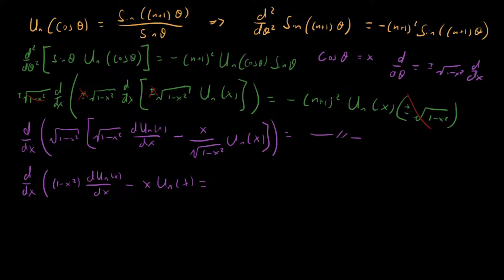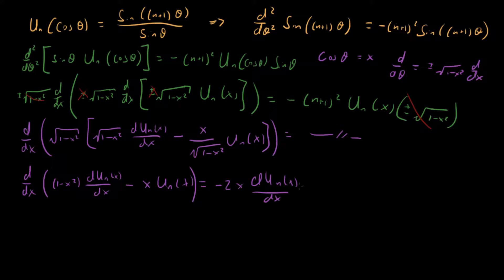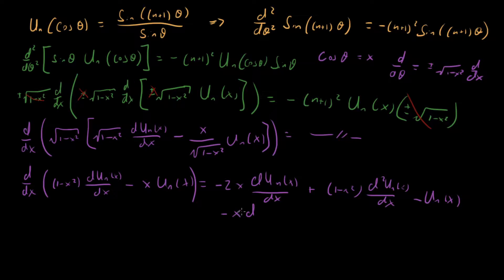That equals minus (n+1)-squared U_n of x. Now let's do the product rule again — actually two product rules. Taking the derivative of one-minus-x-squared dU_n/dx gives minus 2x times dU_n/dx plus one-minus-x-squared times d-squared U_n over dx-squared. Then differentiating the minus x times U_n term gives minus U_n of x minus x times dU_n/dx.